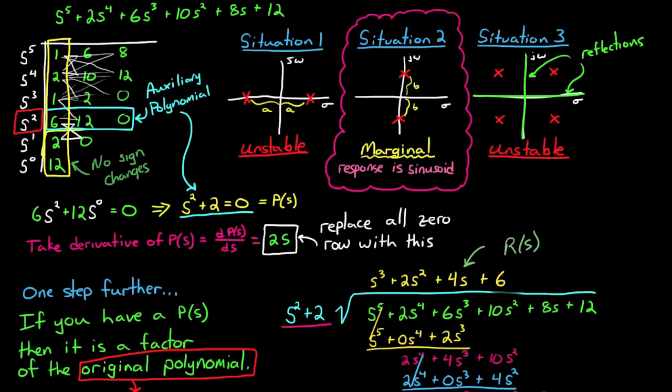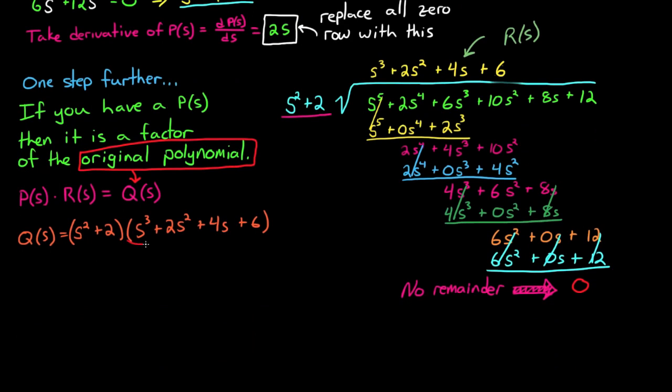Now at this point, we can state that any part of the routh array that is above the auxiliary polynomial goes with our other factor, r of s. And since there's no sign changes at that point, we can state that r of s is a stable polynomial.